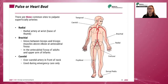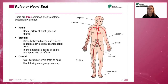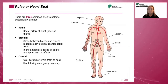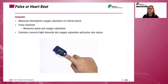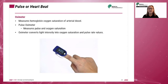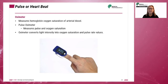During CPR, pulse is usually measured at the carotid artery. In critical settings, the pulse rate may be measured with a pulse oximeter. The oximeter measures hemoglobin oxygen saturation of arterial blood. This instrument is a non-invasive light-emitting probe that attaches to the finger.